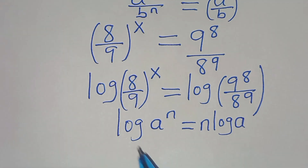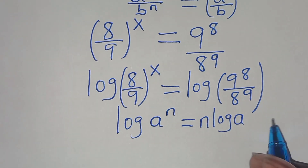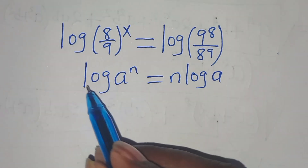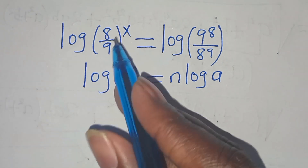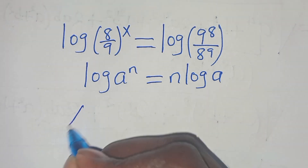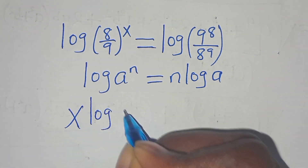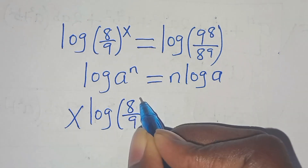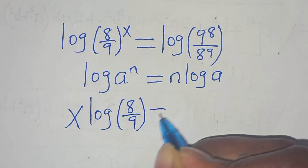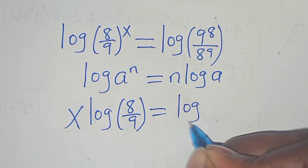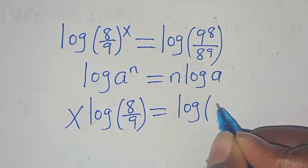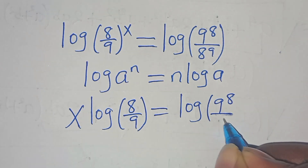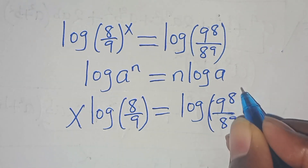Applying the power property, we have x times log(8 over 9), equal to log of 9 to the power of 8 divided by 8 to the power of 9.